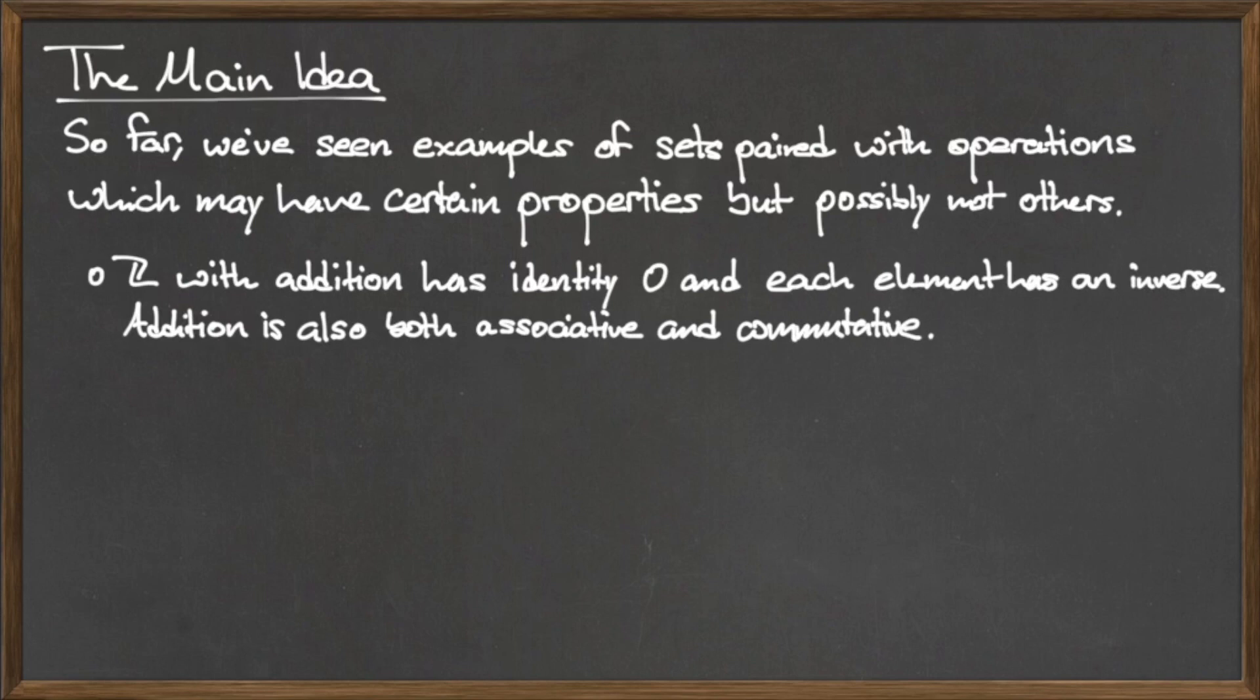the set of integers under the operation of addition has the identity element 0 and the property that each integer has an inverse. The binary operation of integer addition is both associative and commutative.